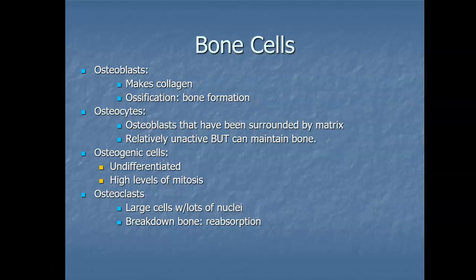An osteocyte, just like an osteoblast, does not go through mitosis — neither of these two cells undergoes that reproductive stage. They can communicate with each other, but they can't reproduce. This raises the question: how do we replace bone cells if our osteoblasts and osteocytes don't reproduce?